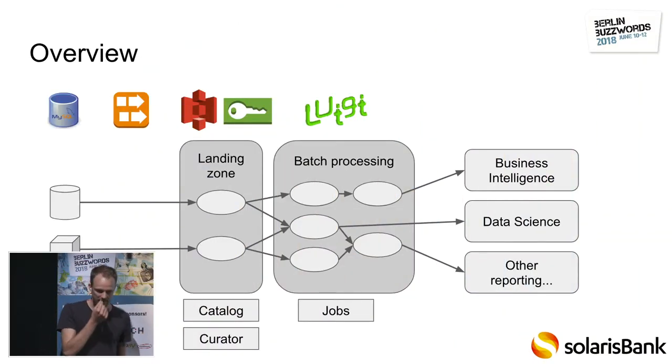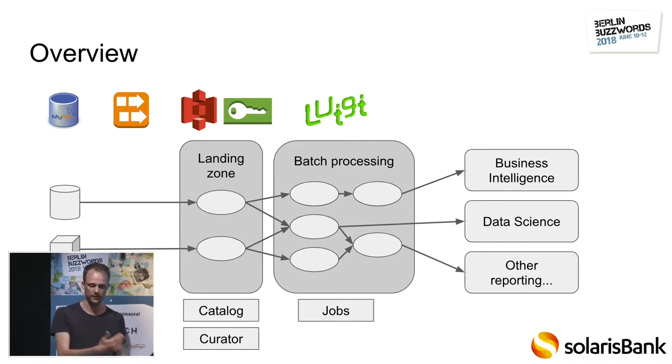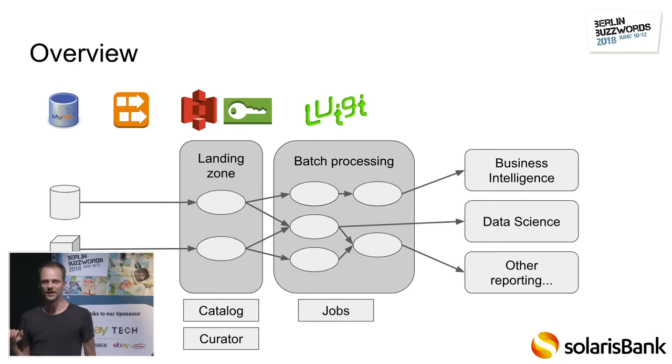If you have business intelligence people or data scientists, initially things are easy — you just attach to the database. But as soon as you have more teams working with different databases and different technologies, things get very painful. You never know where to get your data from, you have to attach to a new system every day, and what used to be one system is now three. Data scientists checking risk positions or generating reports for management or regulatory entities can really get out of hand.